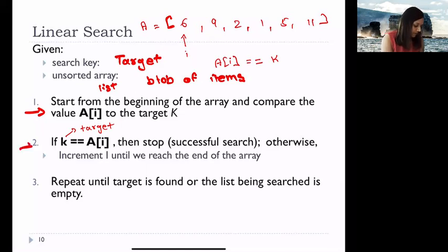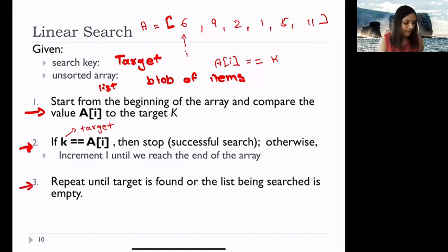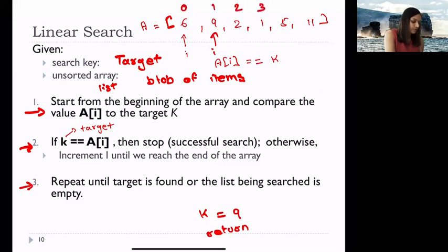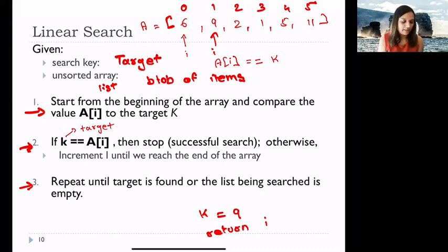If the current element is not equal to the target, you increment index i by 1 and repeat the same step. You keep repeating until the target is found or the list is exhausted. For example, if k equals 9, you increment i once and find A[i] equals 9 at index 1, so you return index 1.